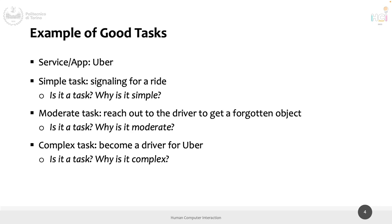Why is this a task? It doesn't say how — good, that's one check. And it has a goal: get a ride, call a car. The goal is implicit but clear. Why is it simple? It's a common task — you probably install Uber because you want to signal for a ride, so it's something 99% of Uber users will do at some point.